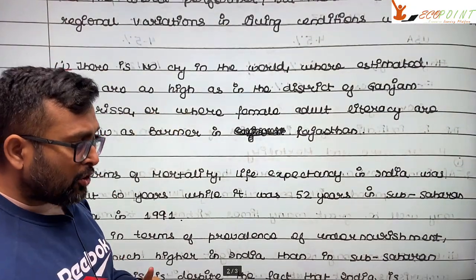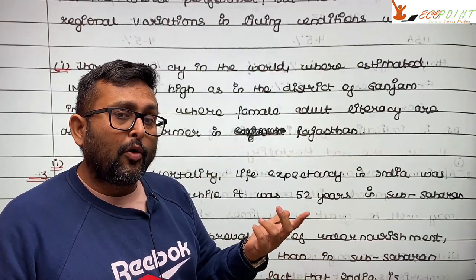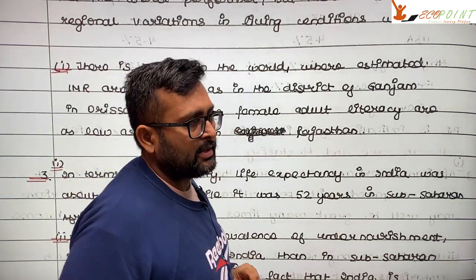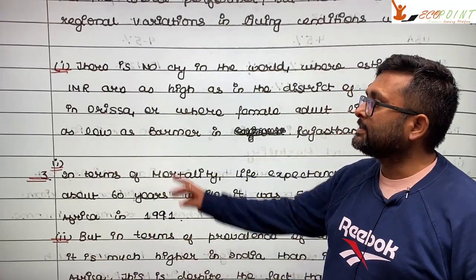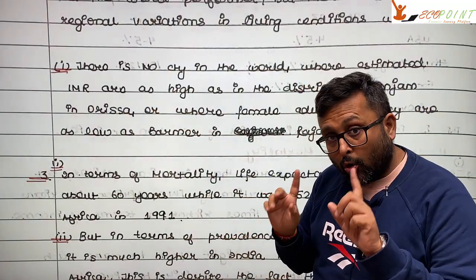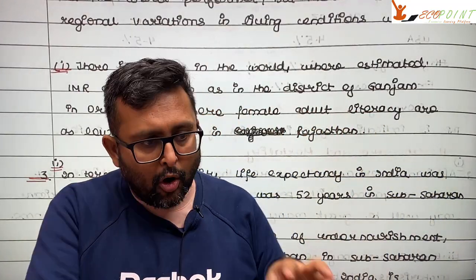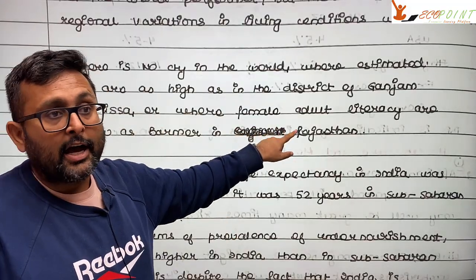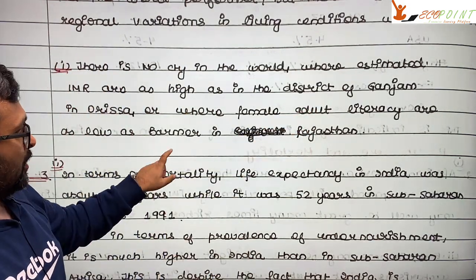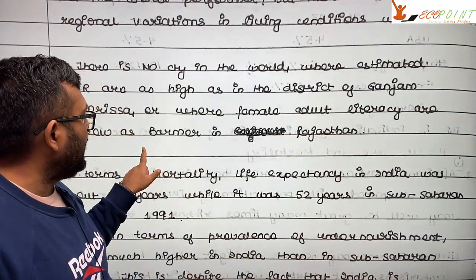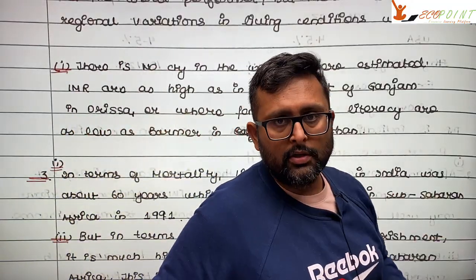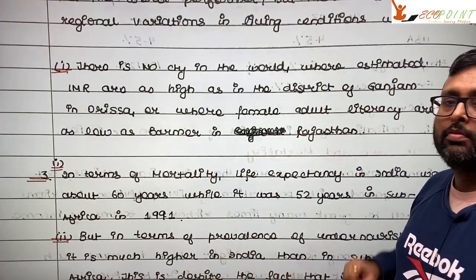But he says look at inequalities from another angle. Look at the infant mortality rate in Ganjam district of Orissa — there is no other country in the world, including sub-Saharan Africa, where infant mortality rate is that high. Also, female adult literacy rate is very low in Barme district of Rajasthan, lower than any country in sub-Saharan Africa or anywhere else in the world.